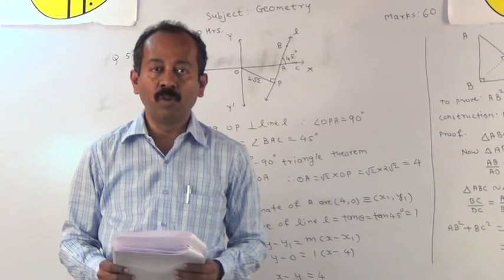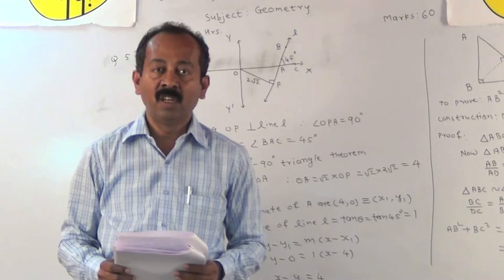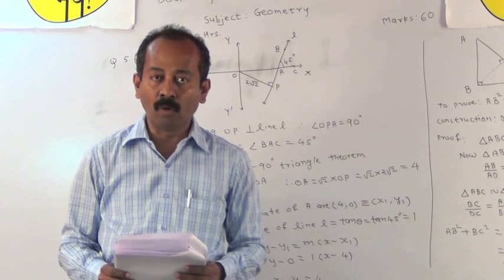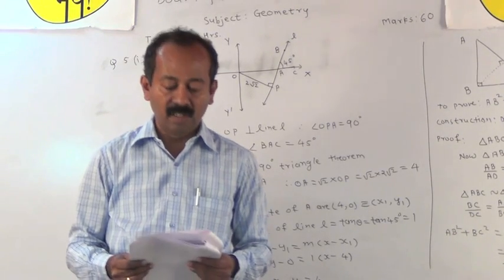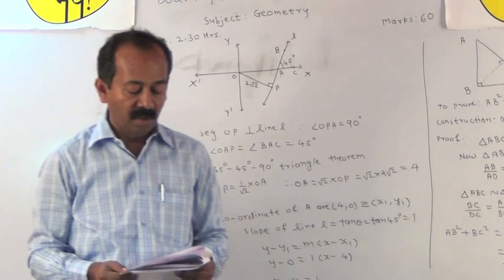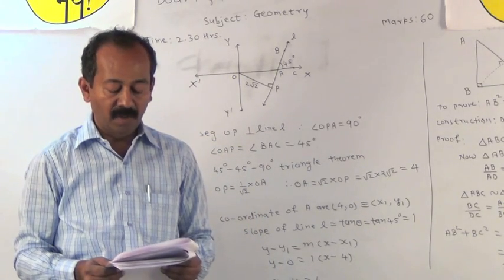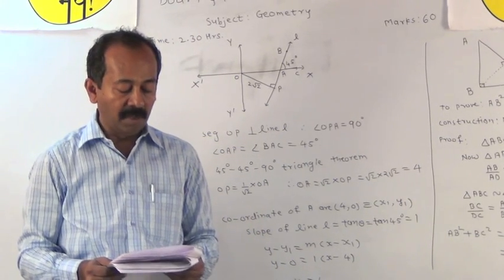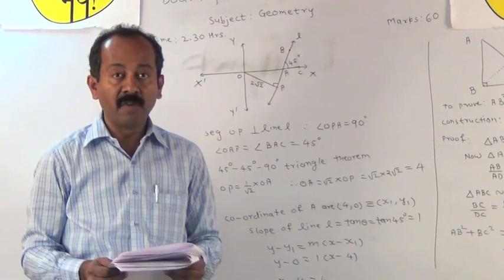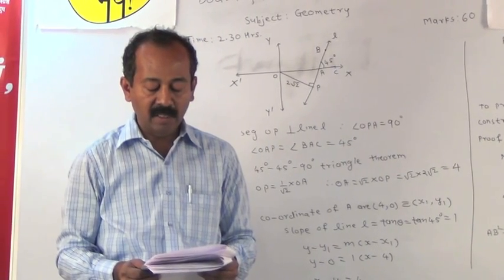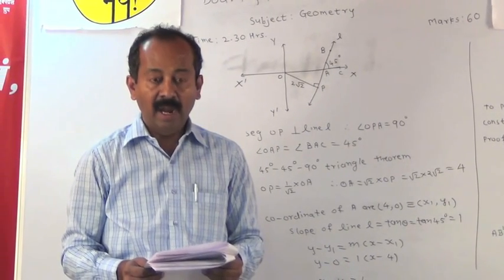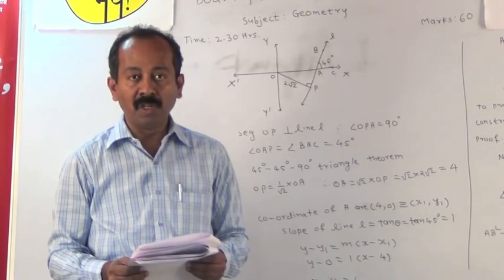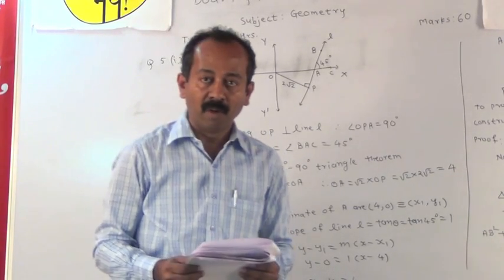Question number 5, in which chances of asking hot questions are more. For the first sub-question: find the equation of the line making an angle of 45 degrees with the positive x-axis and at a distance of 2√2 from the origin.